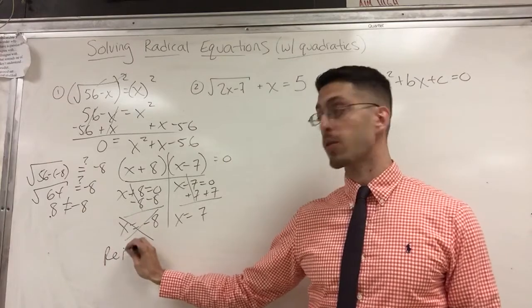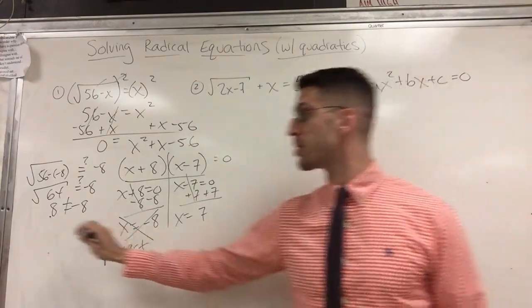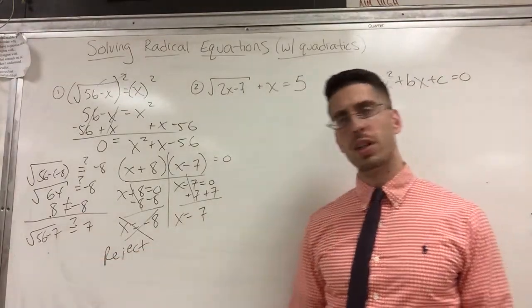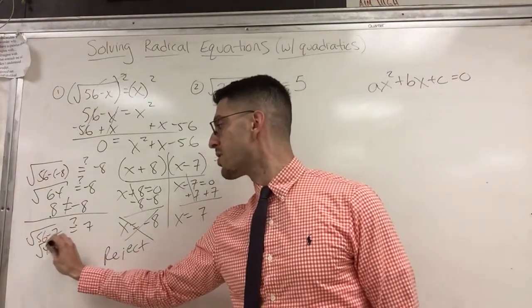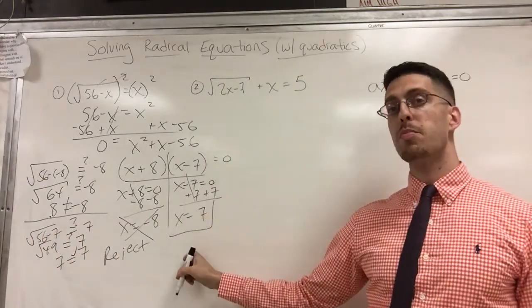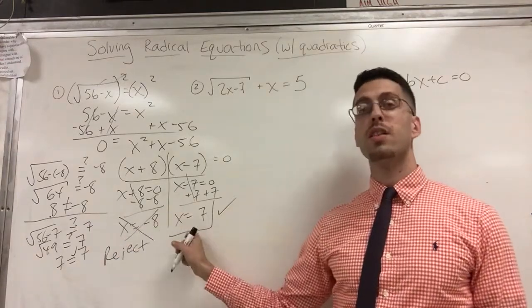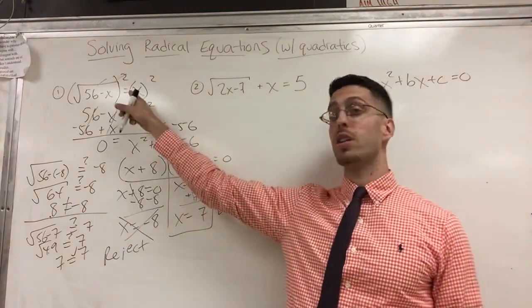Now I'm going to go for 7, see if 7 works. So again, the square root of 56 minus 7, does that equal 7? Well, 56 minus 7 is 49. The square root of 49, does that equal 7? Absolutely, 7 equals 7. So I'm going to keep it, and I know that is my correct answer. All right, so be careful. Just because you get two solutions don't mean they both work. This one's extraneous. This one is the only one that actually works in the original equation.